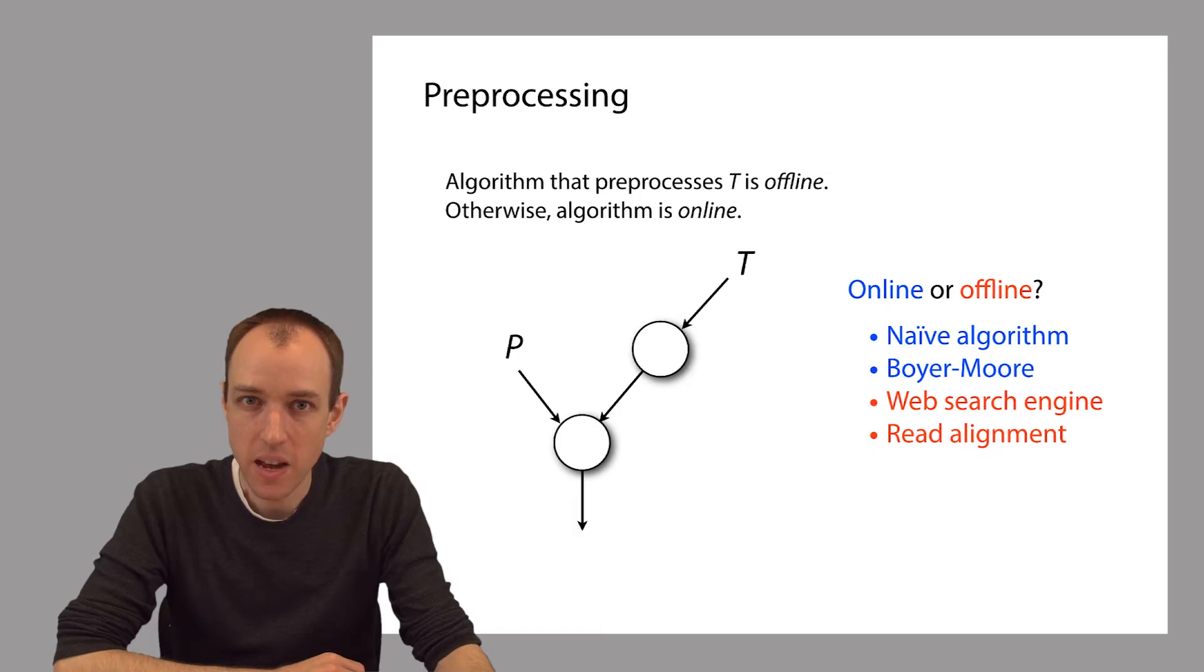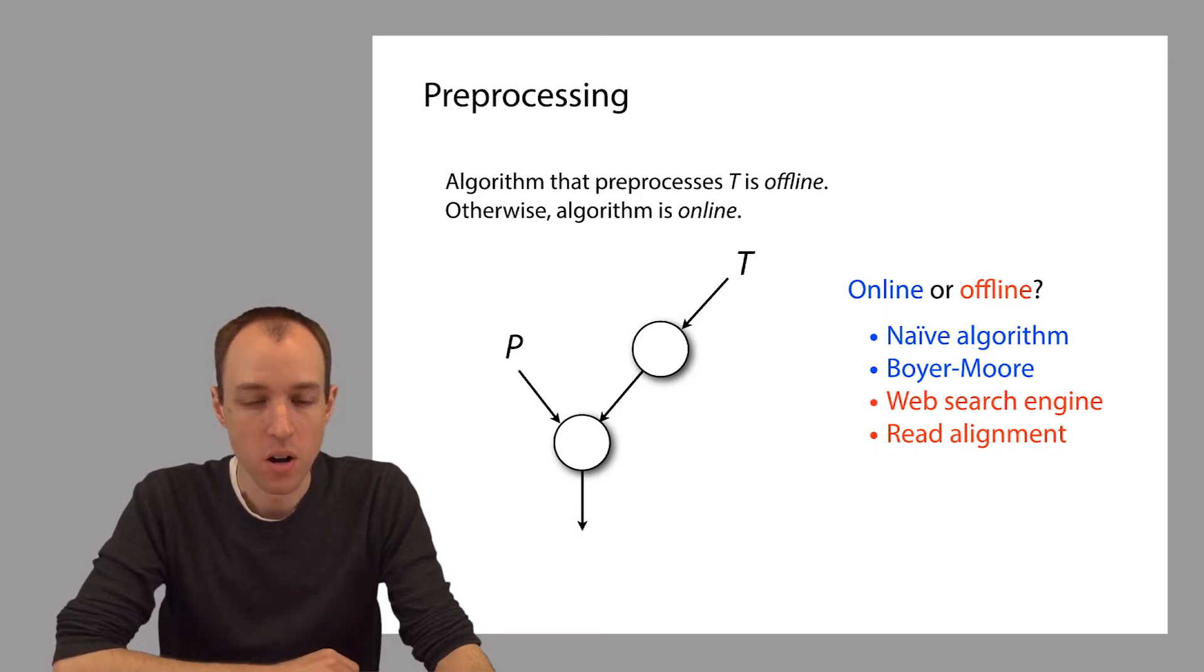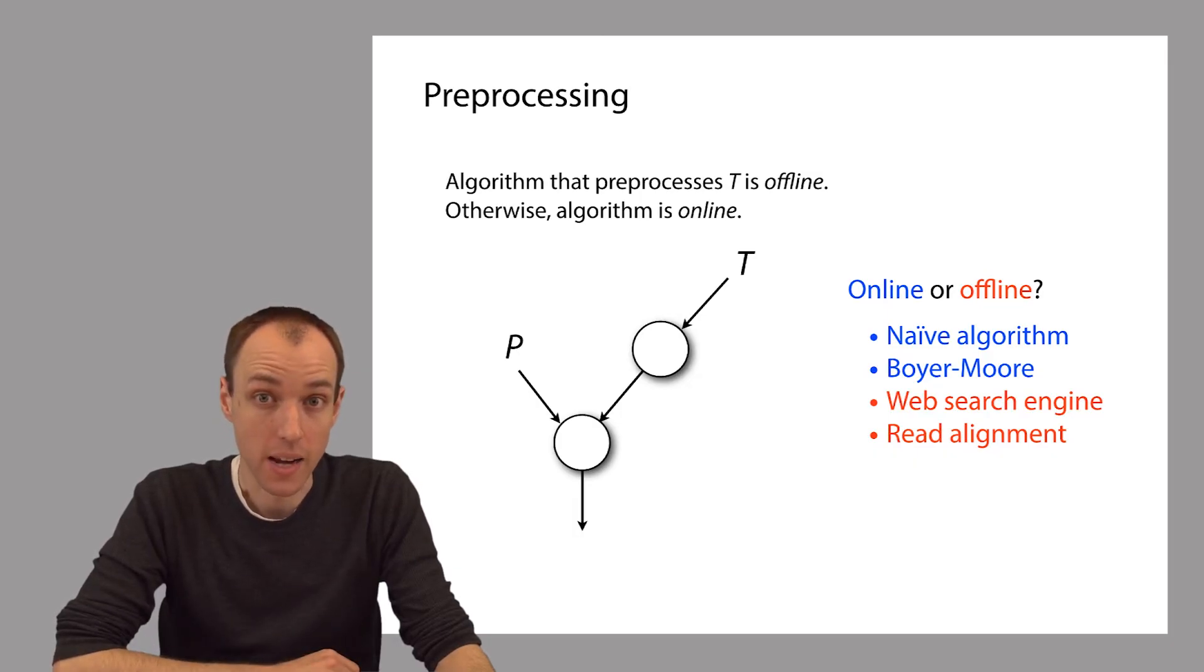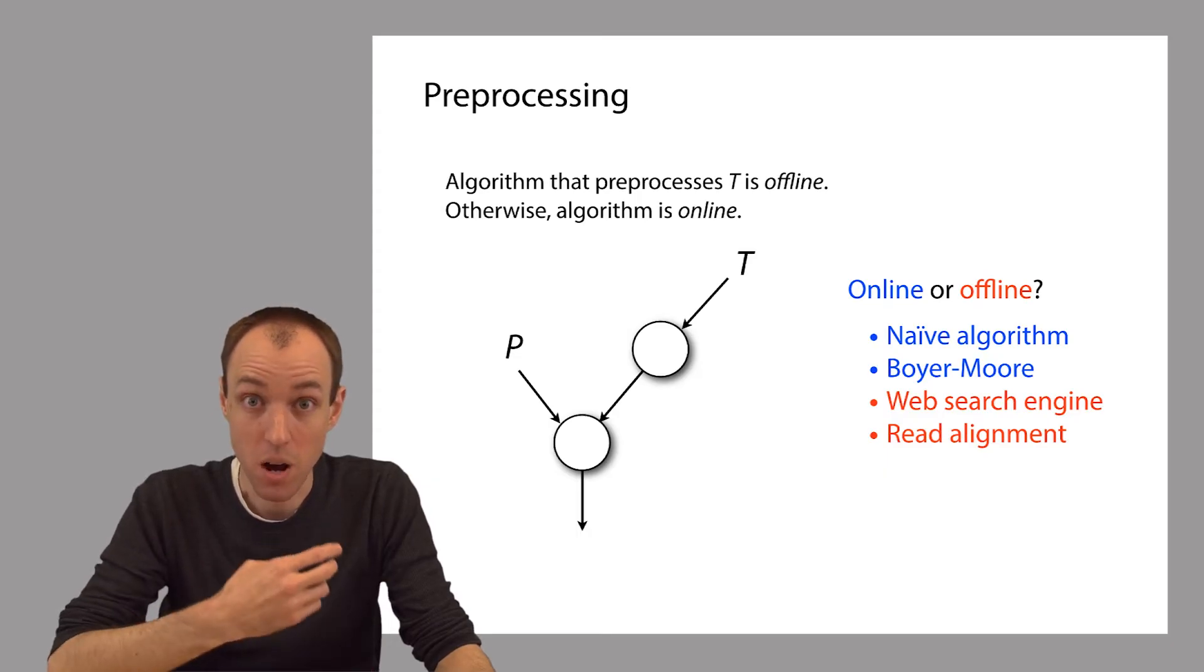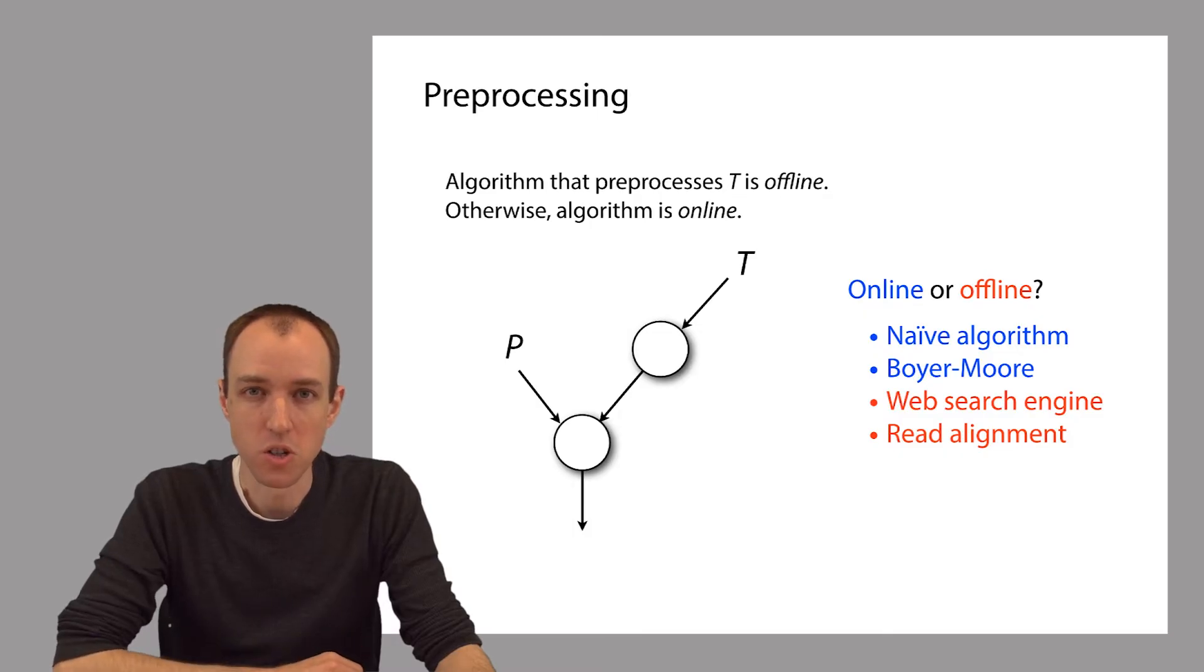We decided that the naive exact matching algorithm and Boyer-Moore were both examples of online algorithms, whereas web search engines and the read alignment problem are both situations where offline algorithms are more appropriate.